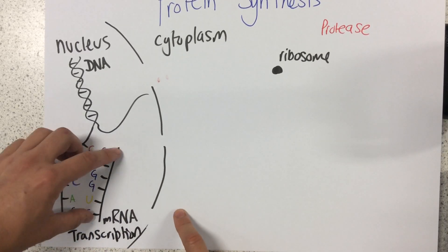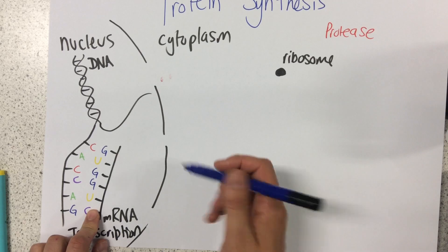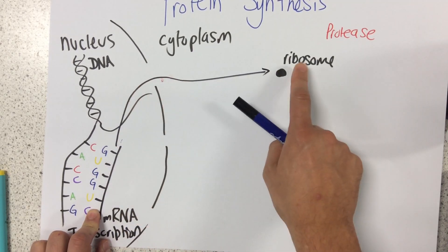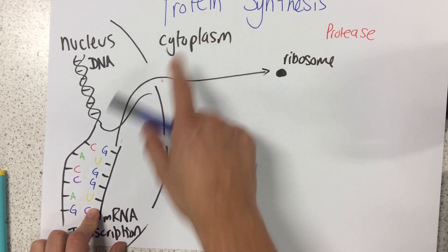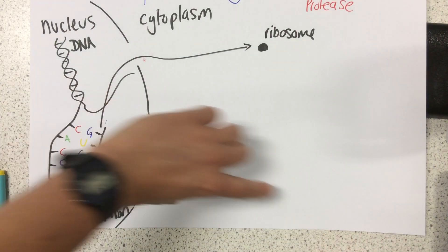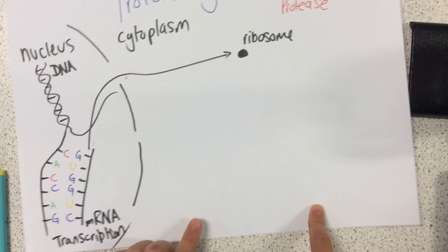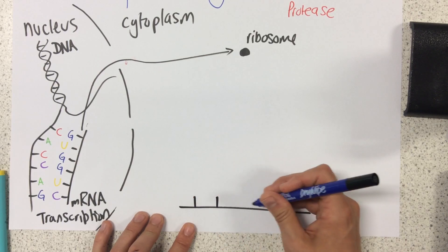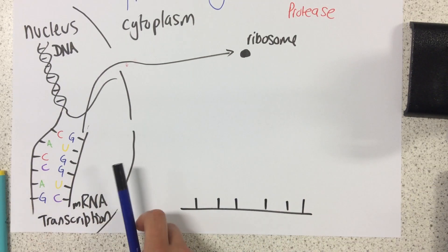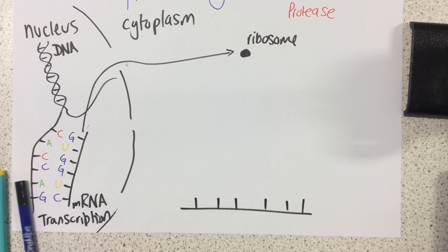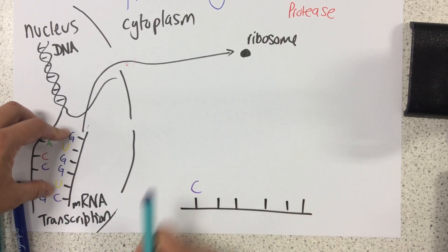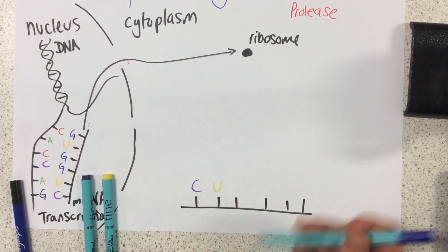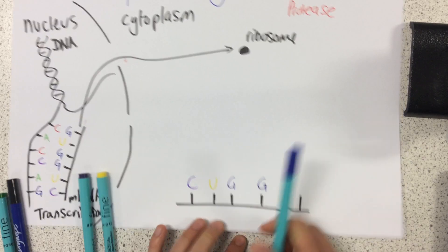Once we've managed to have this mRNA strand formed, it leaves the nucleus via a nuclear pore and goes to a ribosome which is situated within the cytoplasm. I'm just going to draw this strand down here because I've got some space, but remember this would be happening at the ribosome. Please keep in mind that in reality this would be much, much longer than just six bases — I'm just drawing six for the sake of ease right now.